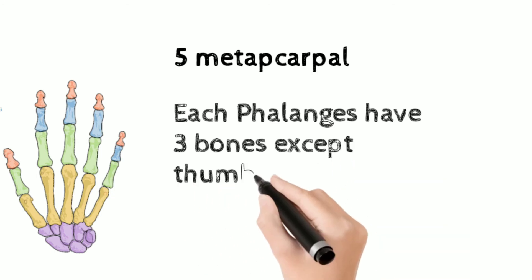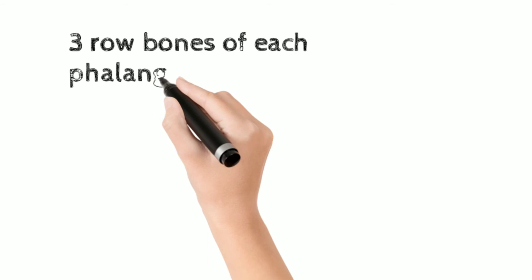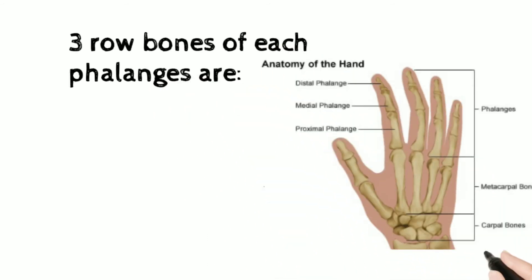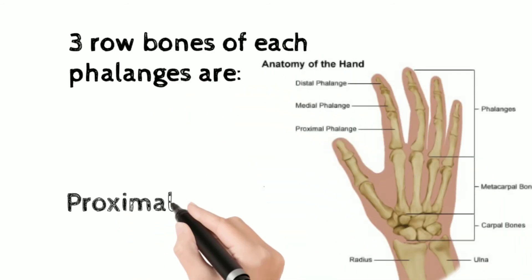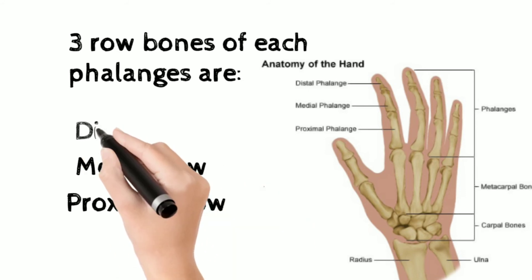The four fingers of the hand contain three rows: first is the proximal row, second one is the medial row, third one is the distal row. But the thumb doesn't contain the medial one, so the thumb has two rows: proximal row and distal row. So there are 14 phalanges of a hand.